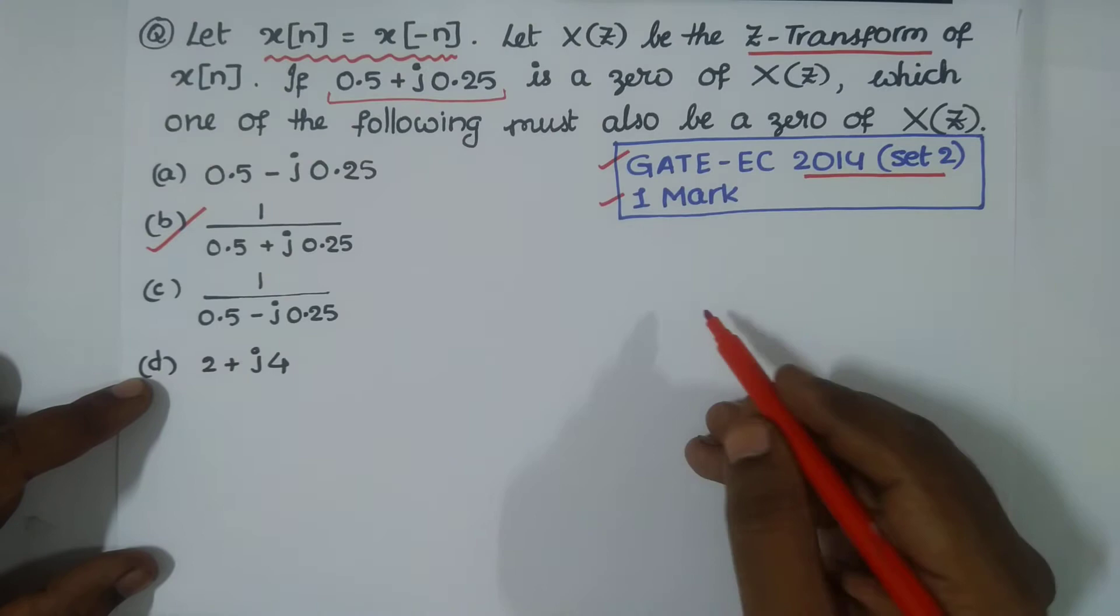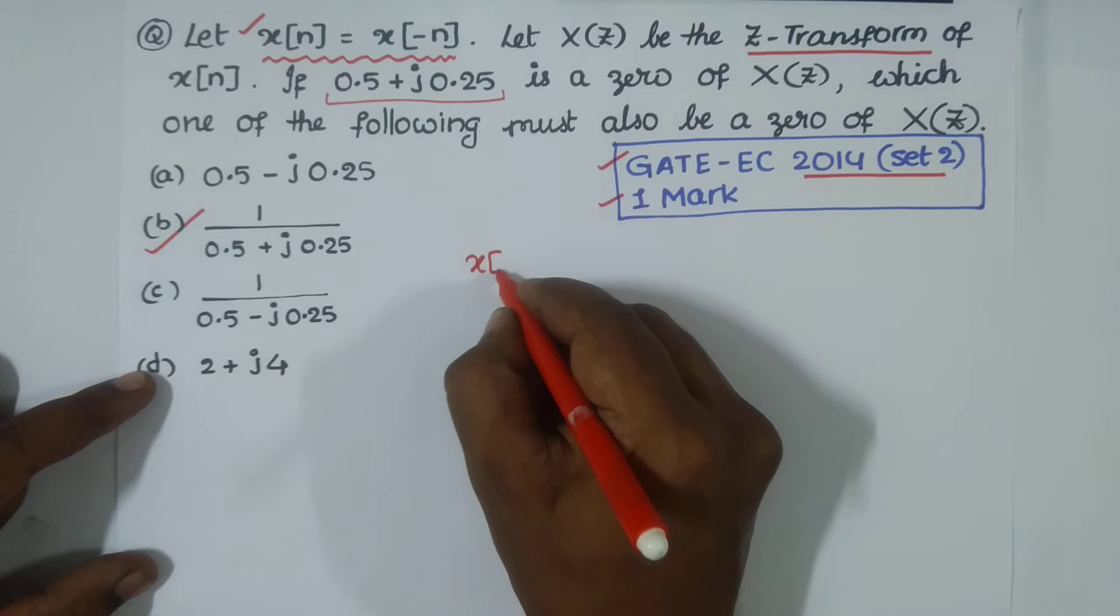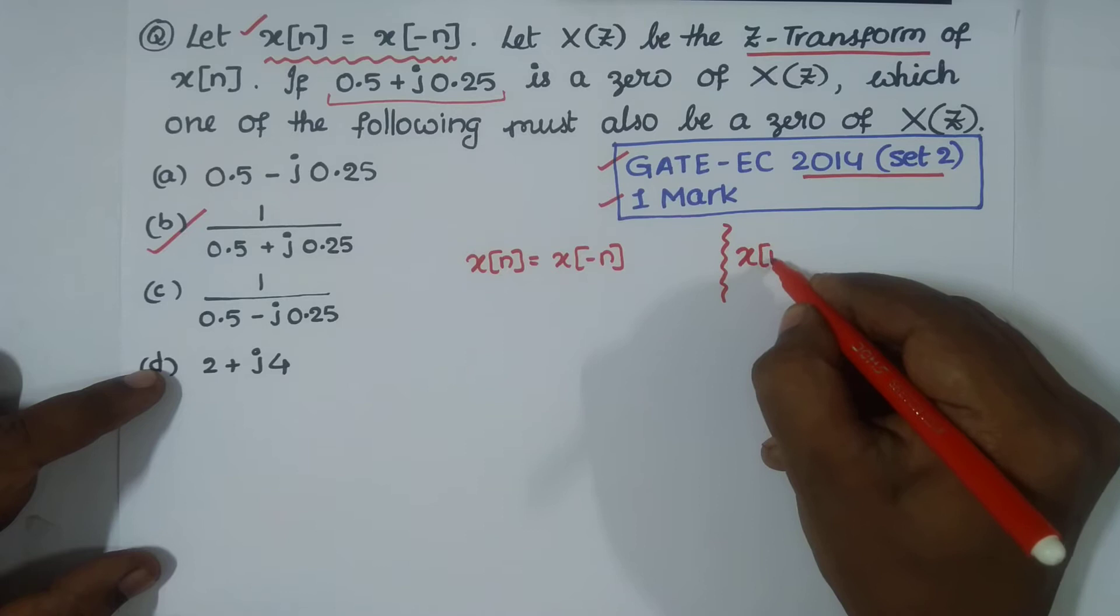Now let us accept this situation: we have X[n] equal to X[-n], and X[n] is a discrete time domain sequence.